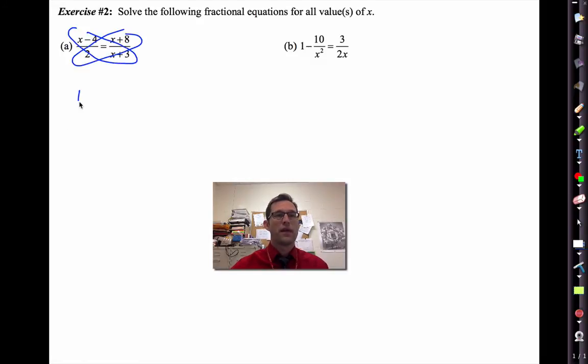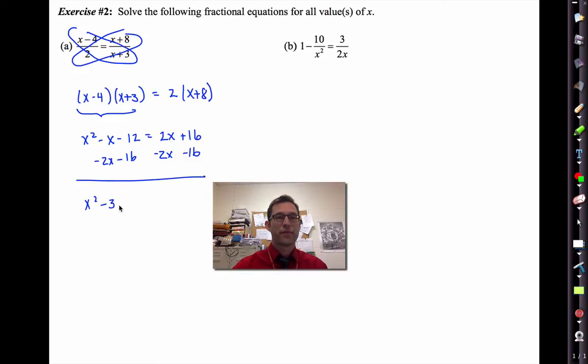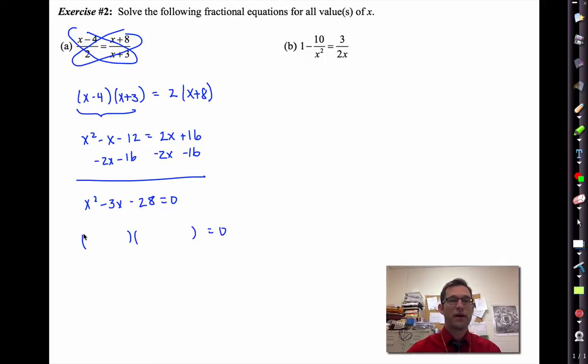Most students will look at letter A and say I've got to cross-multiply. That will give me x minus four times x plus three on the left side, and two times x plus eight on the right side. Of course, I have to be able to square that out correctly, but this is pre-calculus honors, so we're going to do that in our head. Now we just need to get our equation equal to zero. We'll get x minus seven equals zero, x plus four equals zero. So x equals seven and x equals negative four.